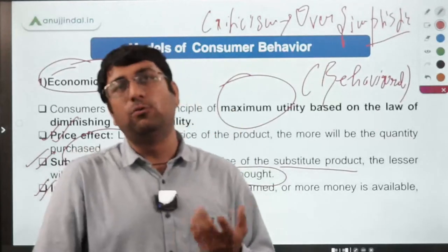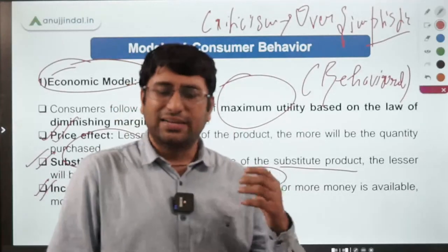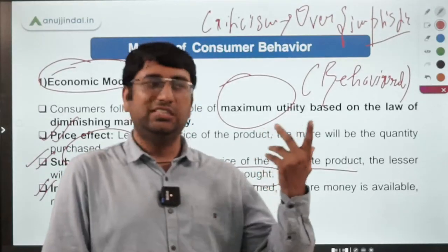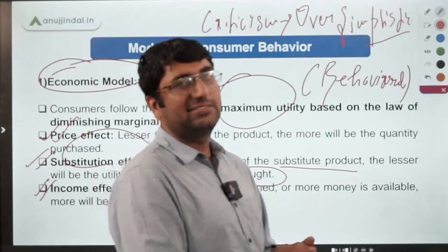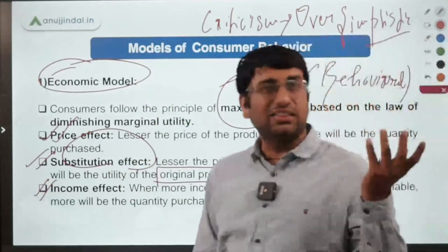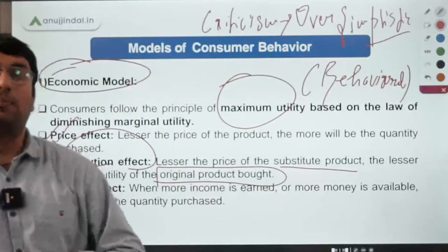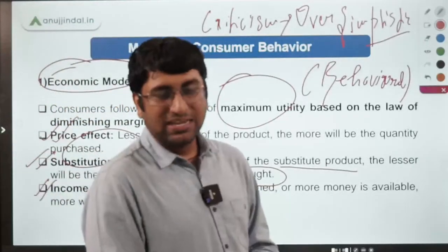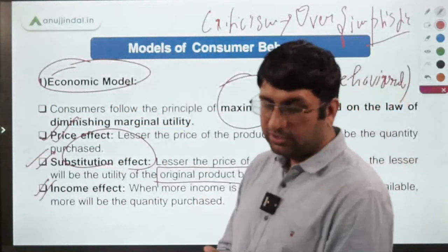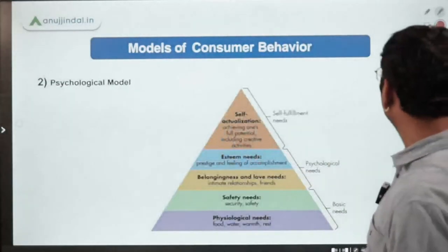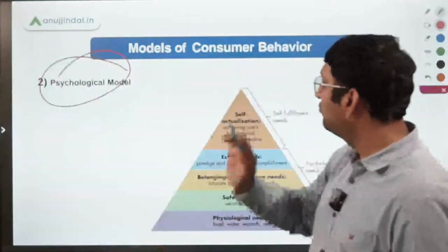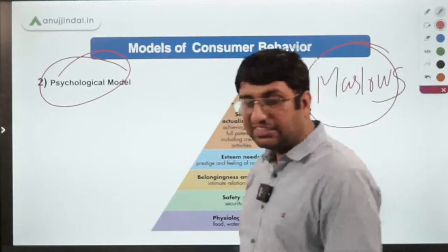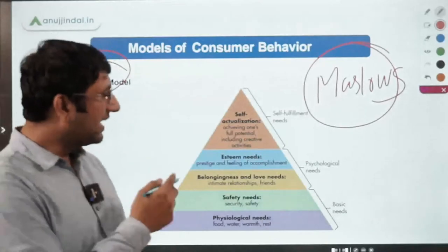Perception and personality also matter a lot. For example, many consumers will say that even if Samsung has all the same features as Apple, they still want an iPhone for the status, social class, and image it projects. There's nothing wrong with that — it just shows that behavioral aspects are very important in consumer behavior.